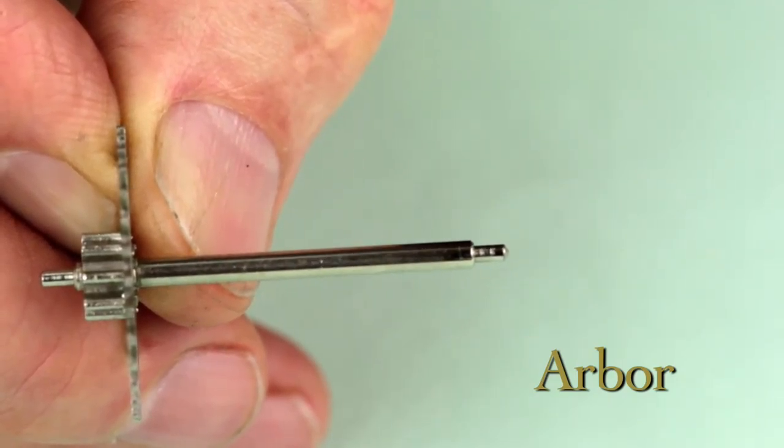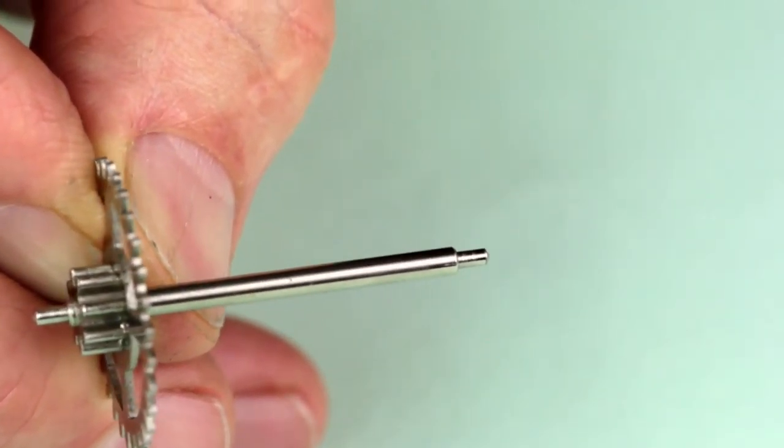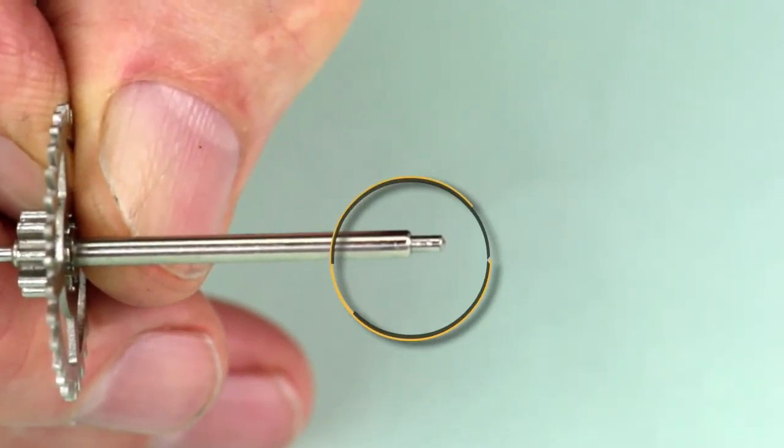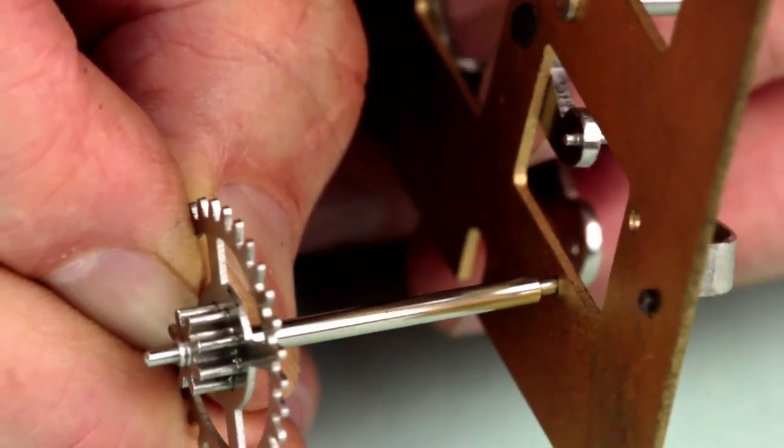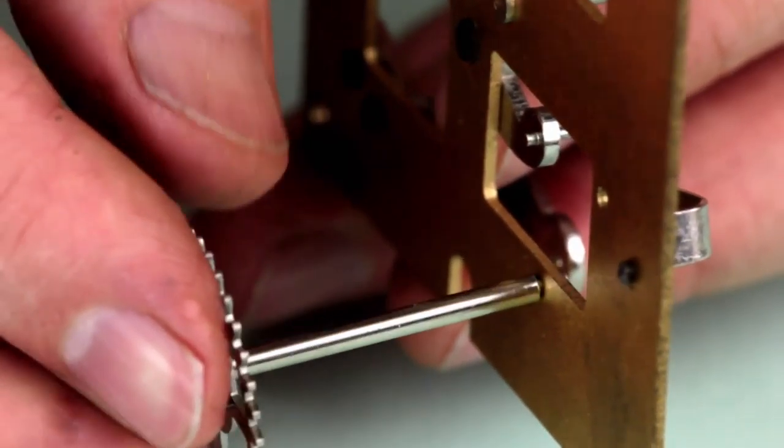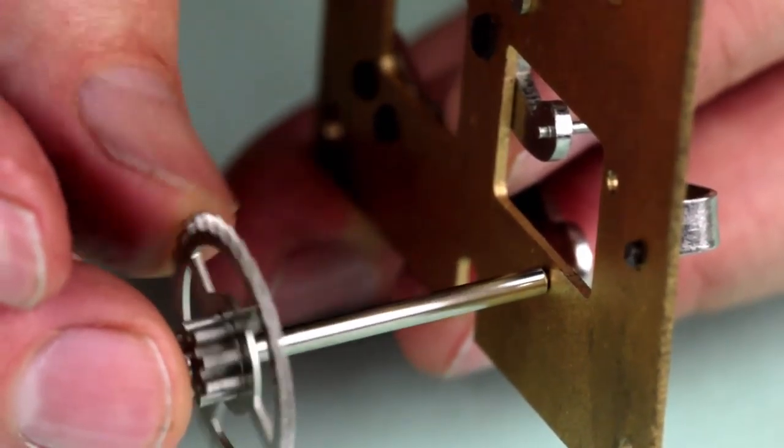This is an arbor. Arbors support things that rotate, like pinions and wheels. This short section, with a smaller diameter, is a pivot. It slips into this bushing hole here, and together they make up a low-friction bearing that allows the arbor to rotate freely between the plates.